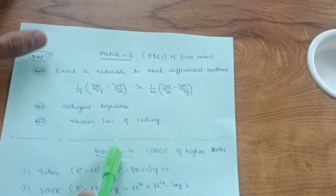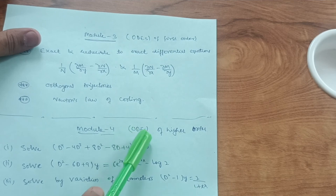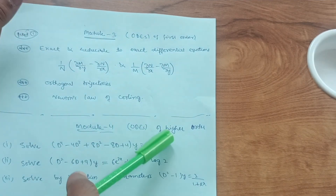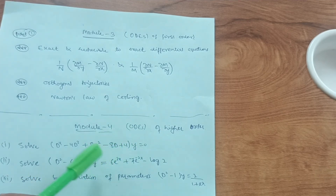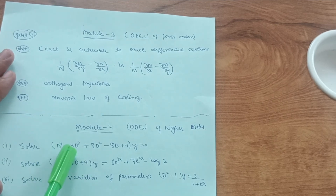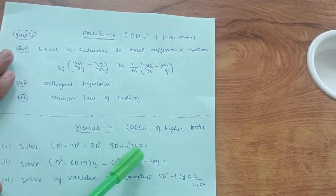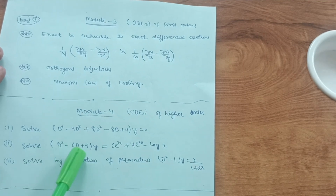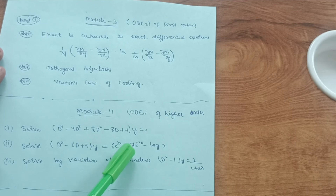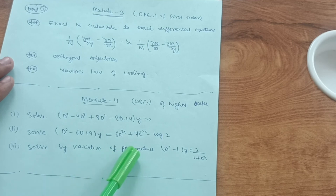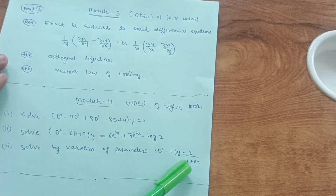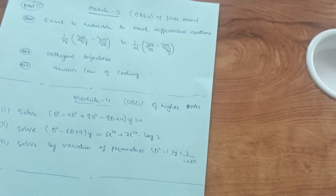Module 4 covers ordinary differential equations of higher order. It is slightly tougher than first order, but once you try problems you will find them easy. For example: solve (D⁴ − 4D³ + 8D² − 8D + 4)y = 0; solve (D² − 6D + 9)y = 6e^(3x) + 7e^(−2x) − log 2; and solve by variation of parameters (D² − 1)y = 2/(1 + eˣ). Covering this much is enough to pass the subject.